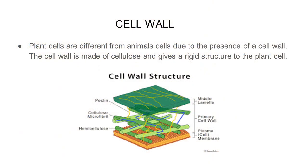Our next topic is cell wall. Cell wall is only present in plant cells and absent in animal cells. Plant cells are different from animal cells due to the presence of a cell wall. The cell wall is made up of cellulose and gives a rigid structure to the plant cell.